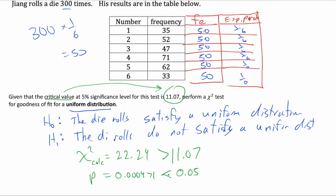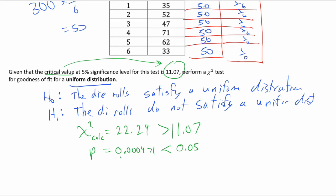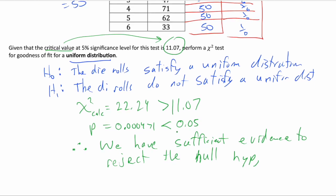We always compare the p-value to the significance level. Remember the rhyme: if chi is high or p is low, reject H0. The p is indeed low — lower than the significance level — so we reject the null hypothesis. We have sufficient evidence to reject it, meaning the die rolls do not satisfy a uniform distribution.